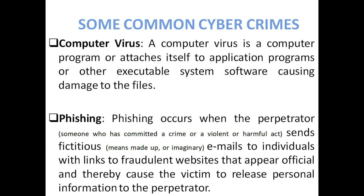Phishing also — phishing occurs when the perpetrator sends fictitious, meaning imaginary, emails to individuals with a link to a fraudulent website that appears official, thereby causing a victim to release personal information to the perpetrator. Suppose someone is sending imaginary or fictitious mail to another person from a website which appears like an official website, but the information sent is harmful. This is called phishing and it is a kind of cybercrime.